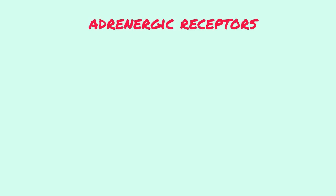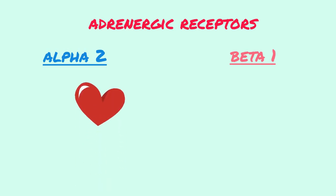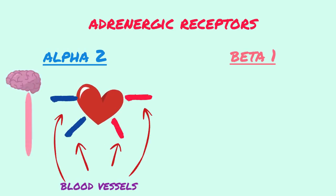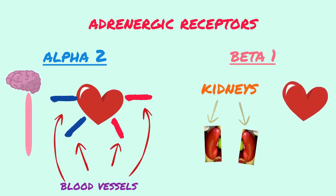Compared to the alpha-1 and beta-2 receptor sites, the alpha-2 and beta-1 receptors are more limited in body locations where they are present. Alpha-2 receptors are found in the heart and smooth muscle tissue of the blood vessels and throughout the nervous system. Beta-1 receptors are found in the heart and juxtaglomerular cells of the kidneys.